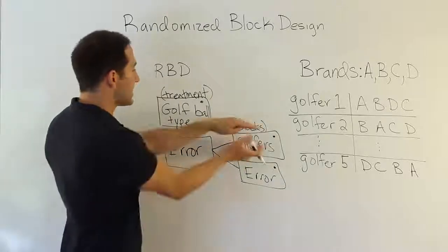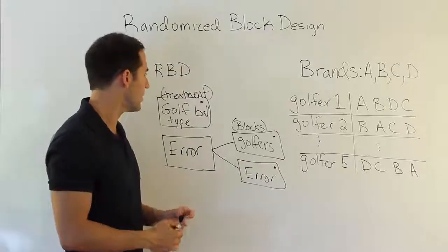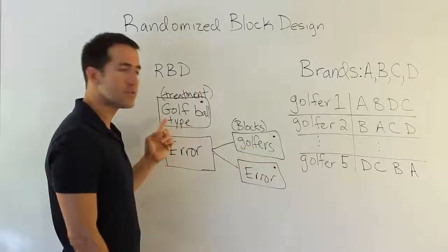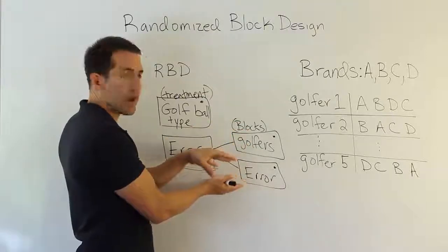Now, essentially, by isolating that, we could run a test to show that the blocks are different from one another if we wanted, I guess. But we're not really interested in the golfers. We're just interested in the balls. By doing this, we separate that effect out, and this is a more pure error. It only has the other stuff that we're not worried about.